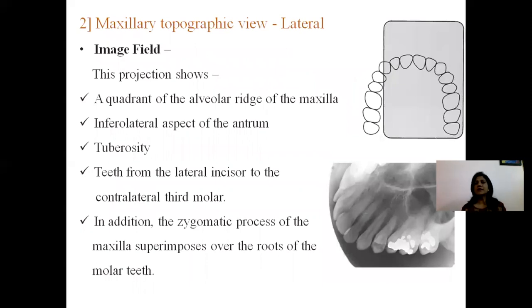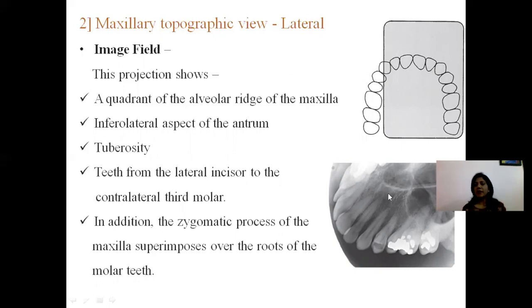The third view is the maxillary lateral topographic view. The image field for this view includes a quadrant of the alveolar ridge of the maxilla, the inferior lateral aspect of the antrum, the tuberosity, and teeth from the lateral incisor to the contralateral third molar. Additionally, the zygomatic process of the maxilla superimposes over the roots of the molar teeth.